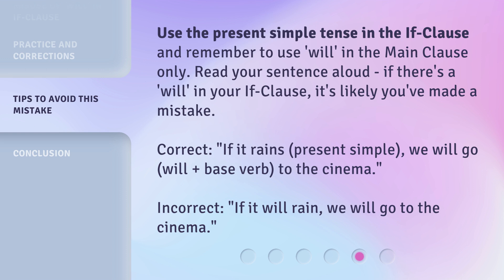Correct: 'If it rains' (present simple), 'we will go' (will plus base verb) 'to the cinema.' Incorrect: 'If it will rain, we will go to the cinema.'